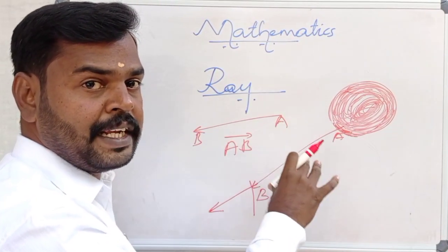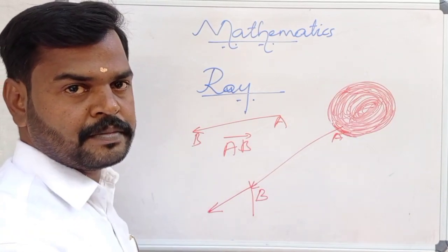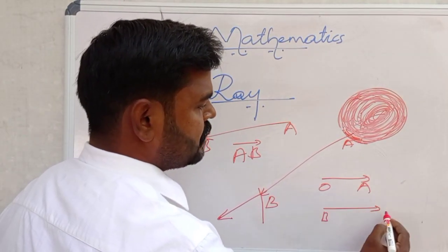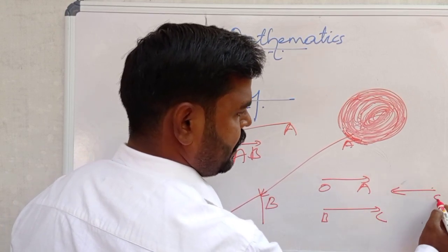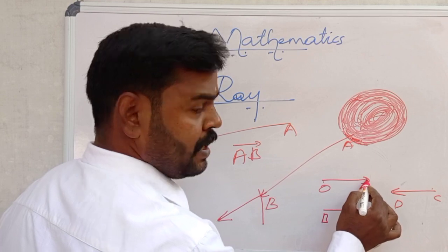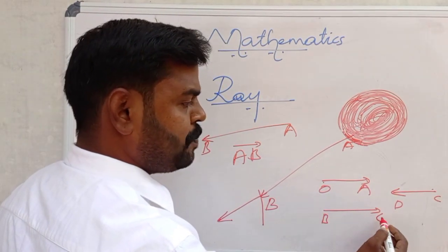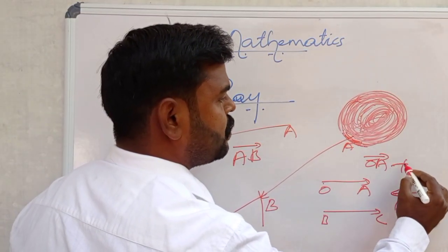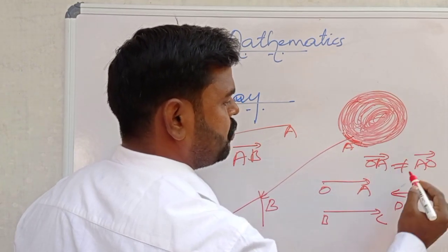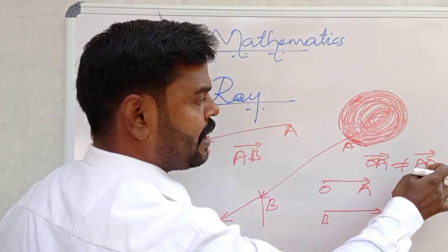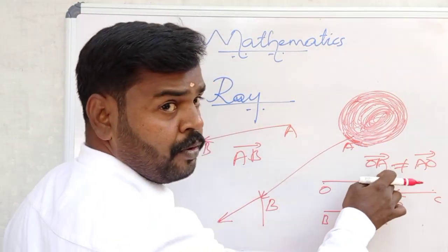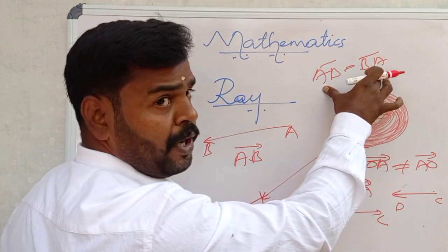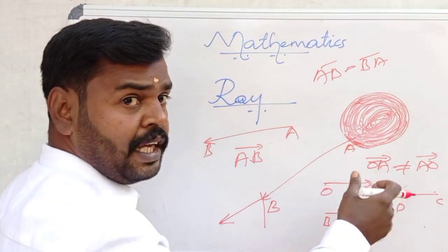A ray does not have finite length — it has infinite length. For example, ray OA means A part extending, ray BC means C part extending, ray CD means D part extending. Ray OA is not equal to ray AO — because here A is extending, while in AO, O is extending. They are not equal. But for a line segment, AB equals BA, because it has two endpoints and neither side is extending specifically.